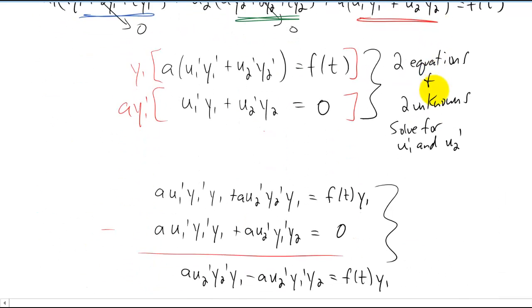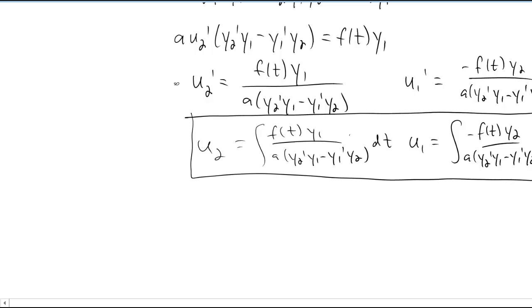Now just a note on notation, you'll notice that this denominator here looks kind of like a determinant or a Wronskian of y1 and y2. You'll notice if you take that Wronskian, you get y1 times y2 prime minus y1 prime times y2 which is just this piece right here. So in your book, they're going to use a slightly different notation than I did here.